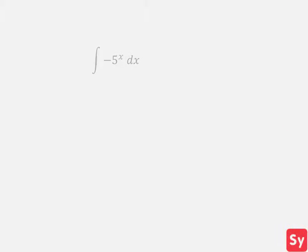Here's our first example. We have the integral of negative 5 to the x with respect to x. First we'll use the constant multiplication rule. We'll pull out a negative 1 from the integral.